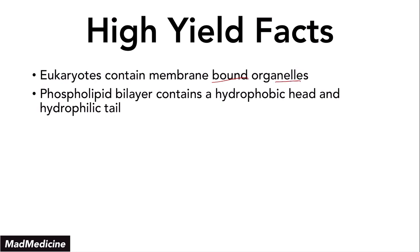The membrane for these organelles and for the cell is a phospholipid bilayer. That phospholipid bilayer has a hydrophobic head, which is going to repel water. Think about phobia — phobia means to be scared of, so the head is scared of water and will repel it. And a hydrophilic tail, which is going to attract water.